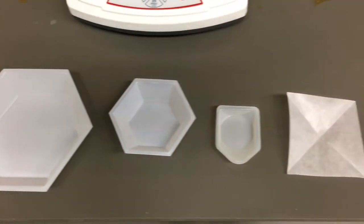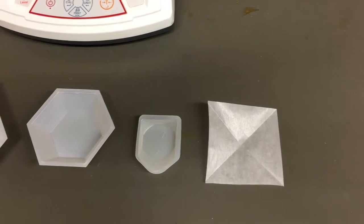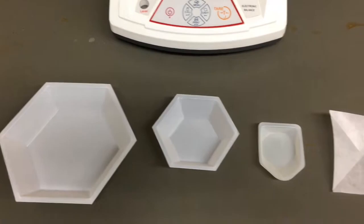Choose an appropriate weigh vessel for your media. For weighing out less than 1 gram, use a piece of creased weigh paper. Weigh boats are useful for measuring out ingredients greater than 1 gram. Do not use heavy glassware.